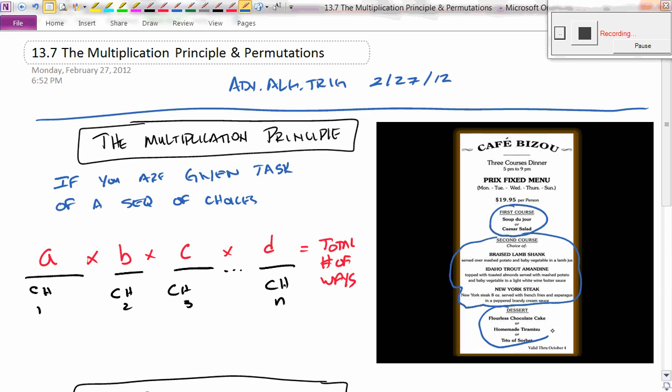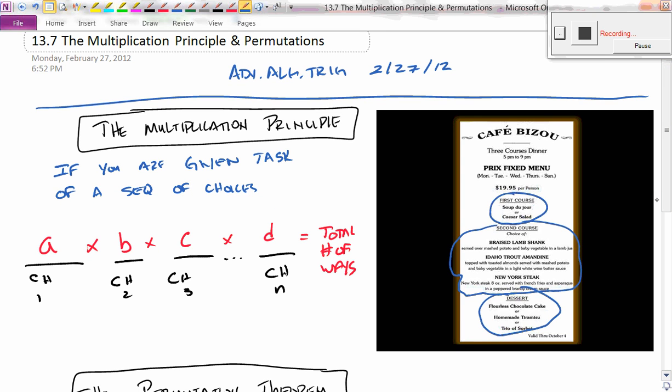And then for desserts, you've got three choices: the cake, the tiramisu, or the sorbet. So the question is how many different meals can be made from this menu? How many different options are there?